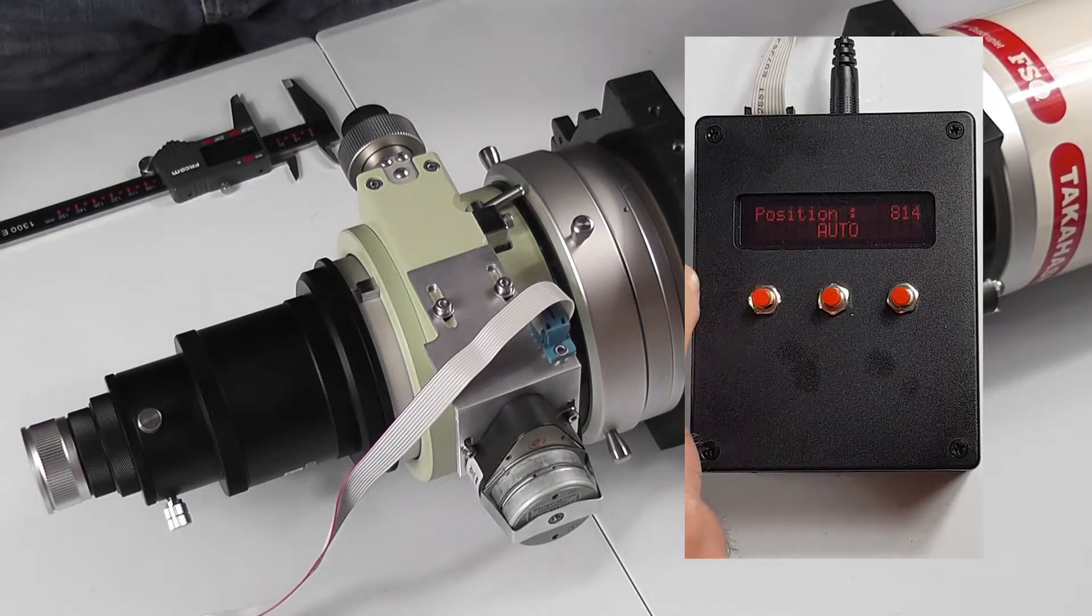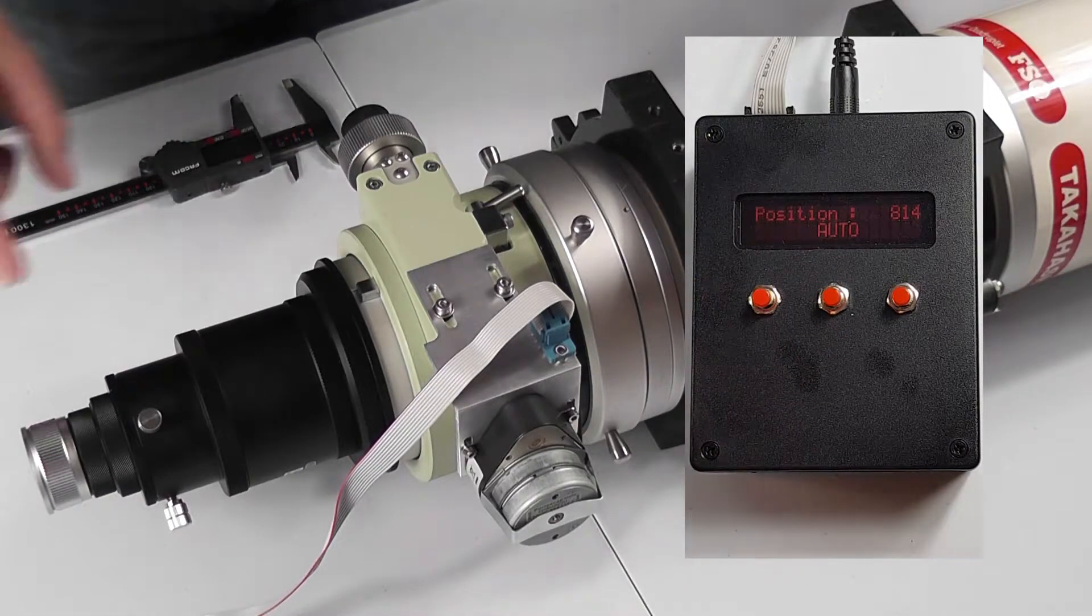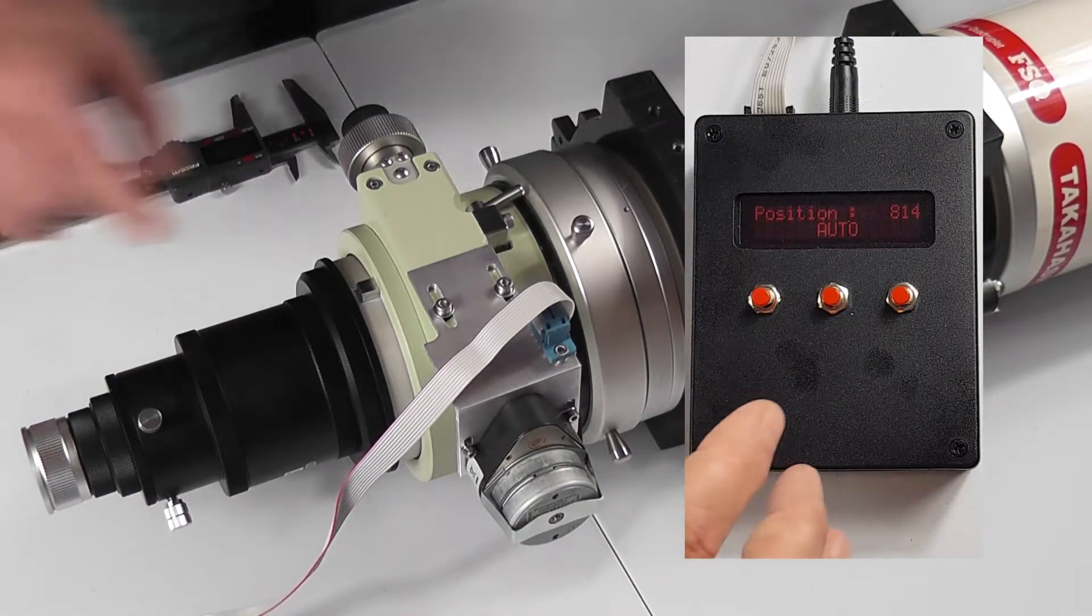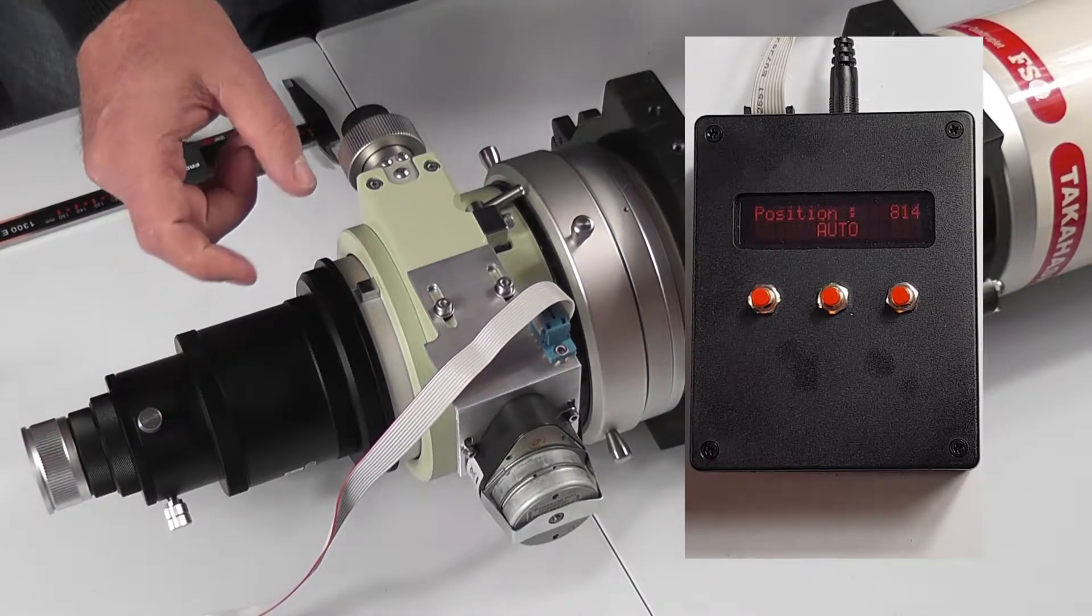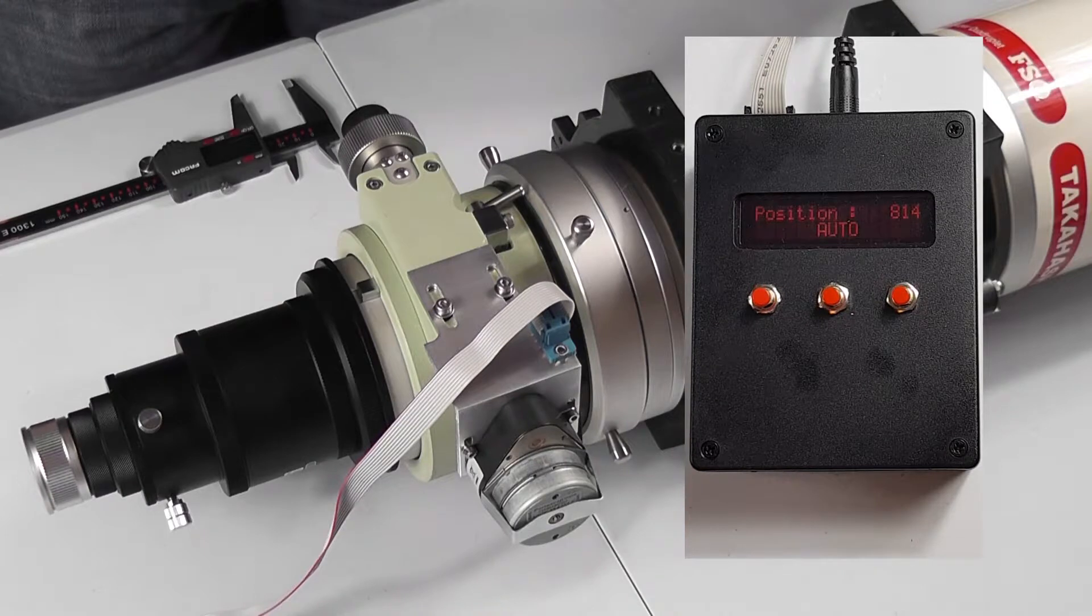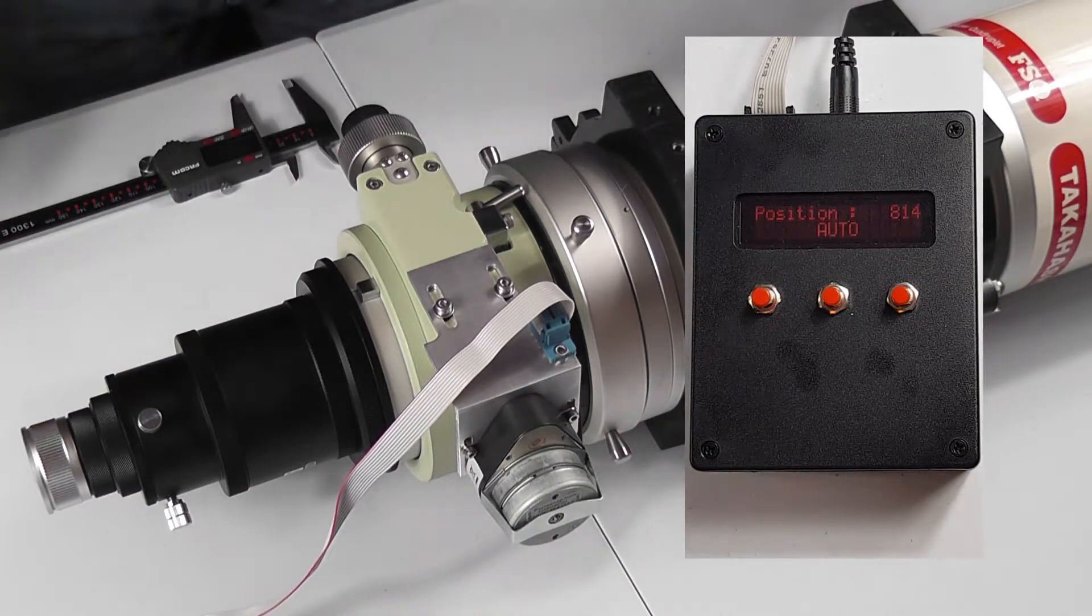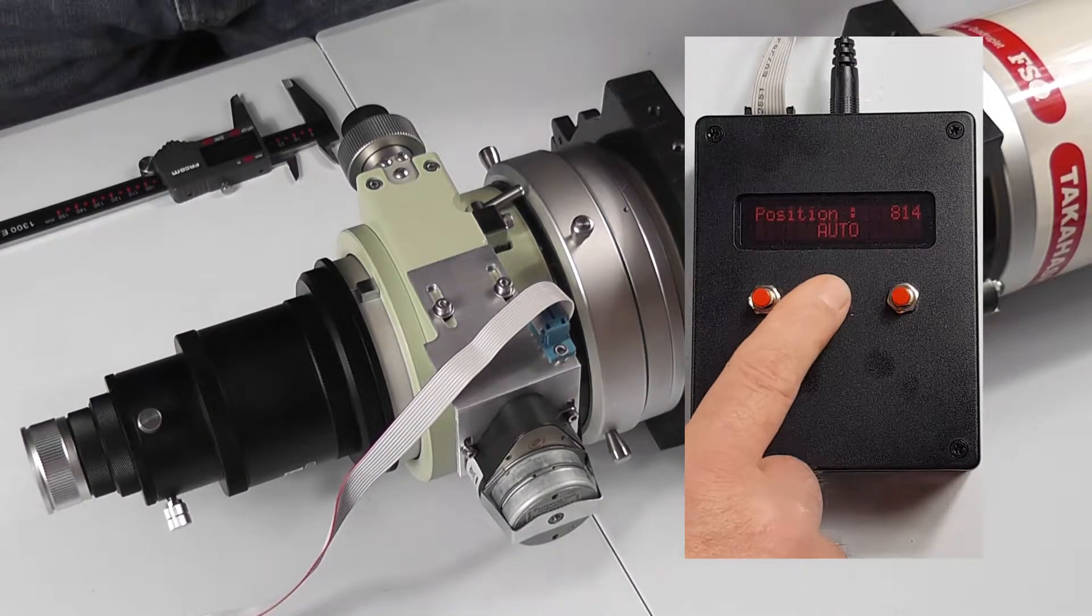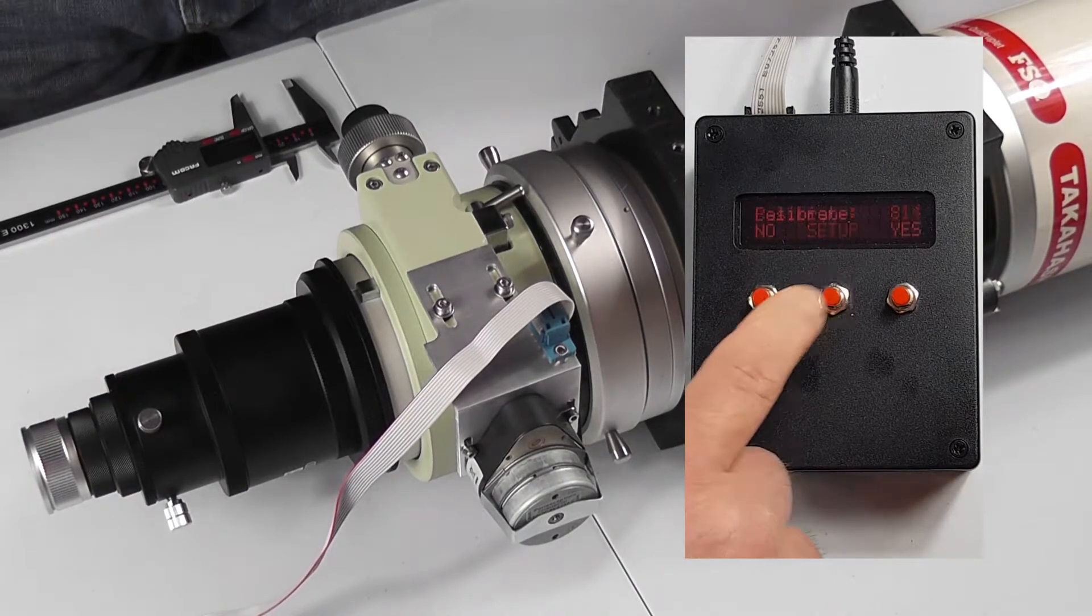So the very next thing that we need to do now is to go through the calibration routine. Now the calibration just tells the controller how far it is from all the way in to all the way out, so that the controller stops your focuser hitting against the stops at the ends. So we go to the setup menu and we're going to calibrate, so we click on yes.